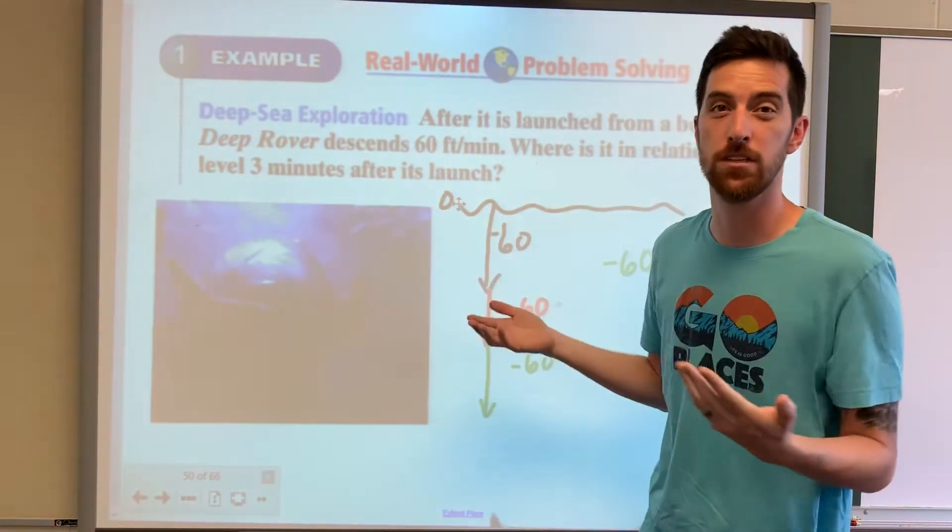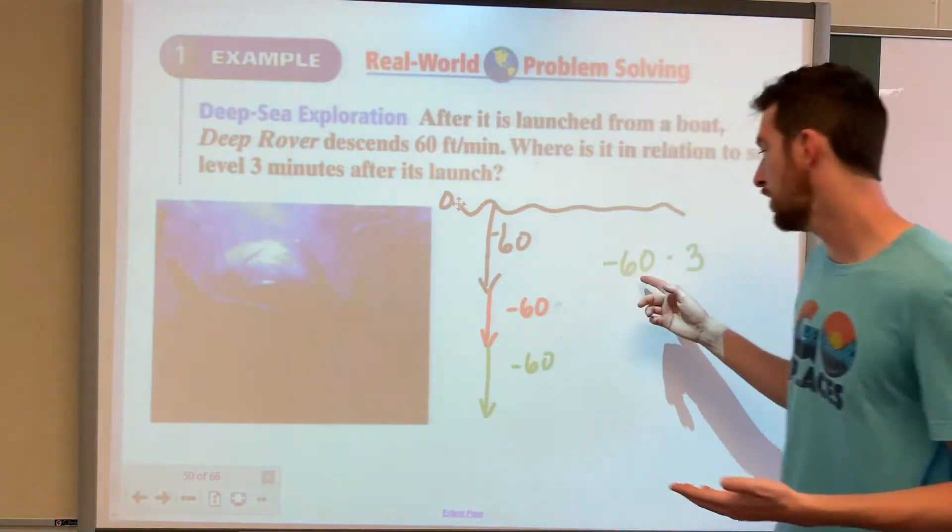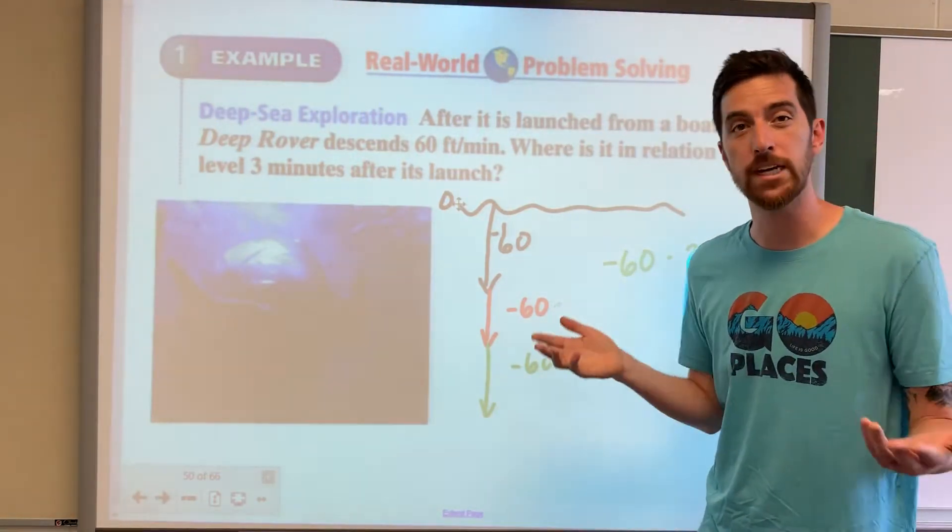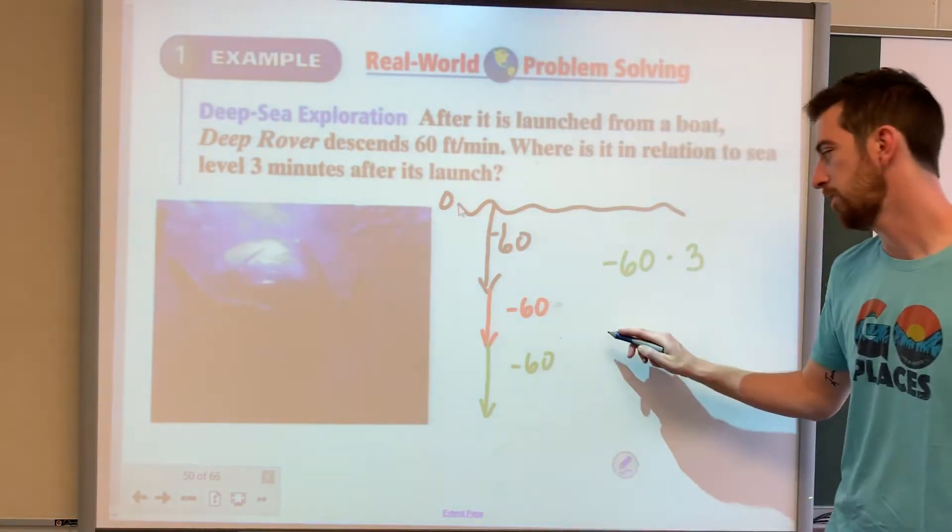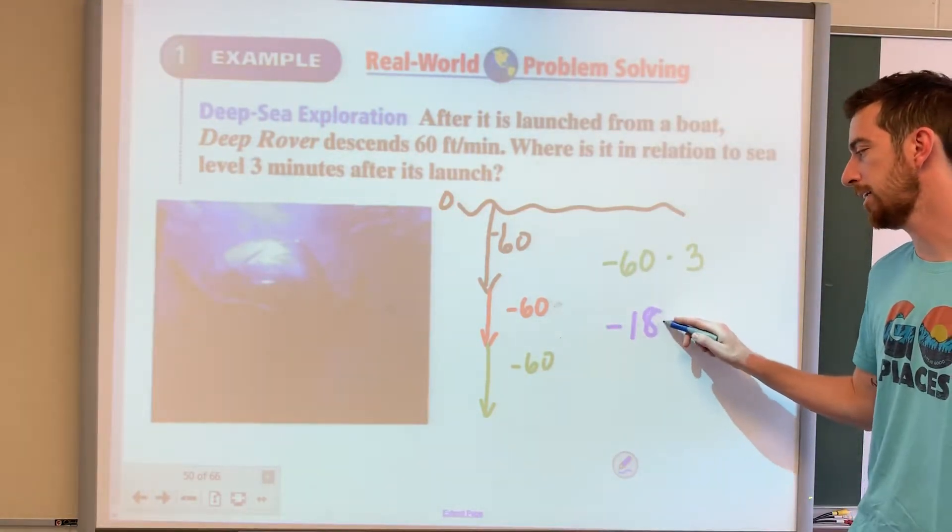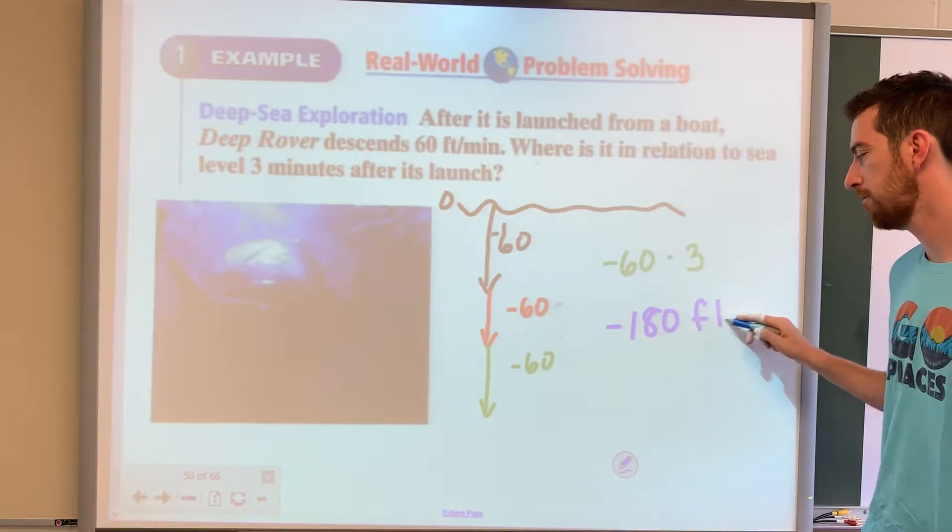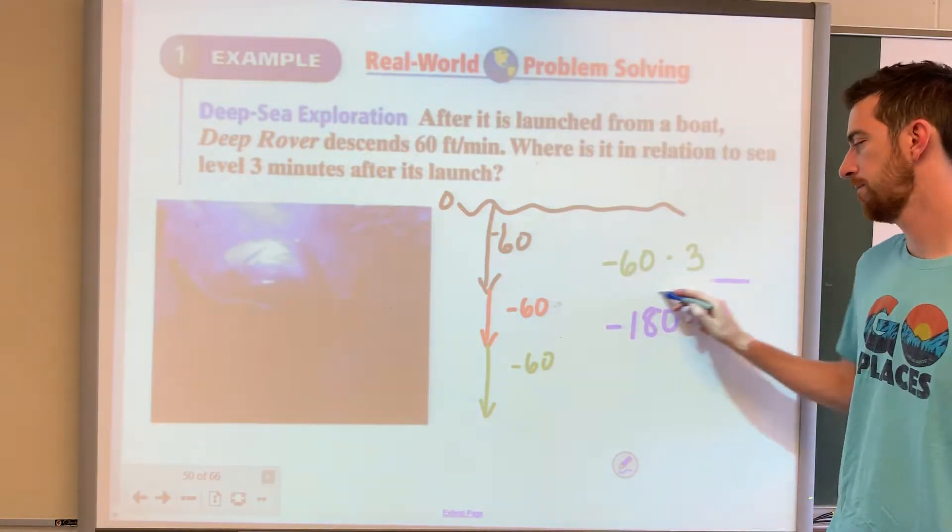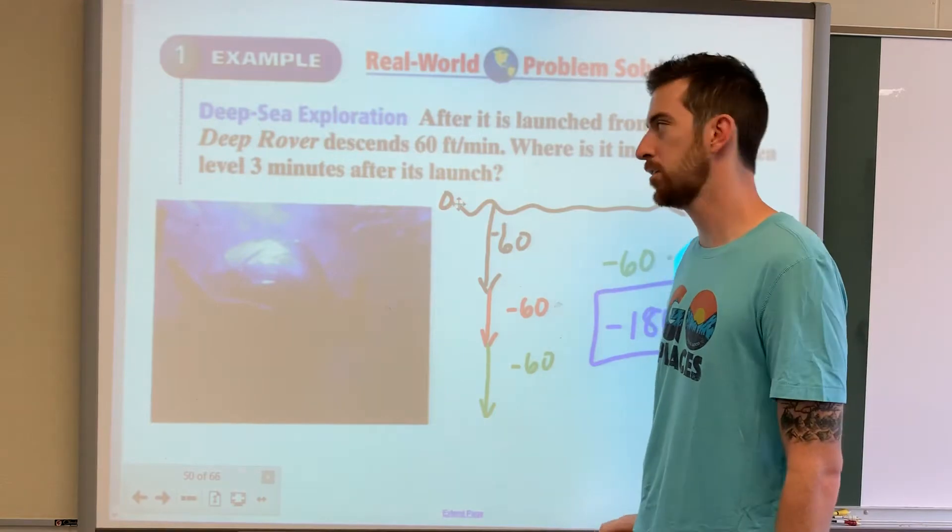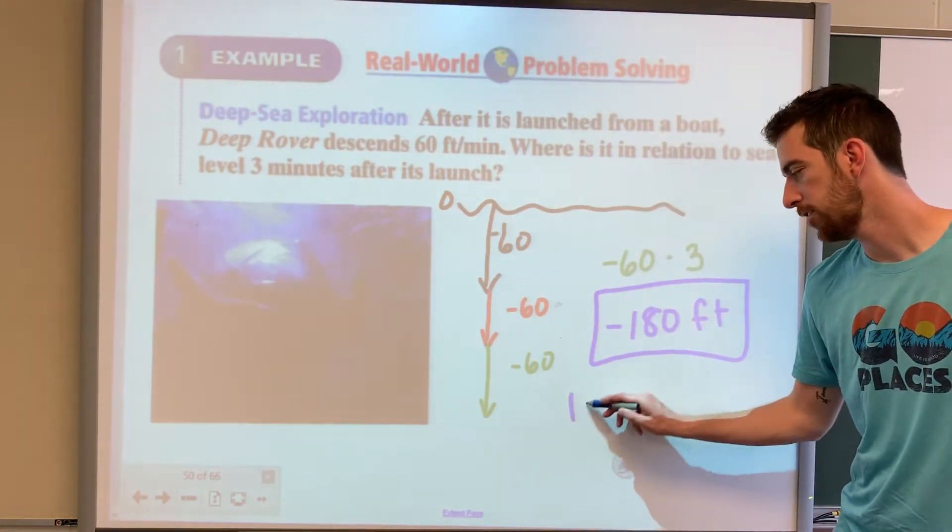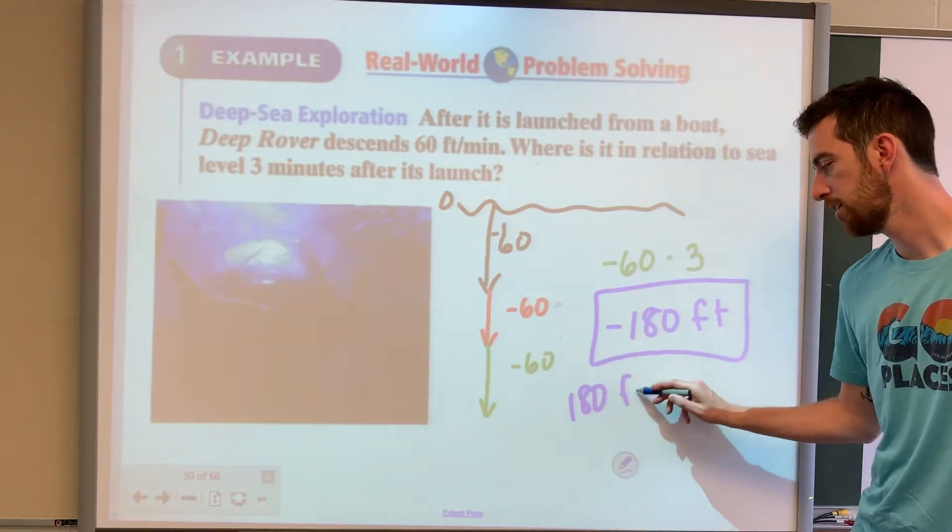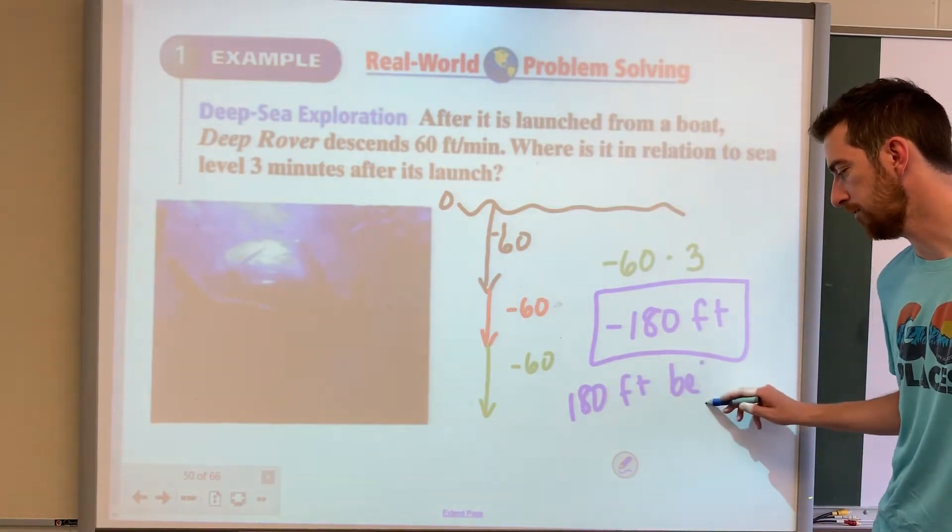So we can just do 60 times 3, which is 180, and then we would take the negative version, so negative 180 feet. 180 feet below sea level. We can say 180 feet below sea level as well.